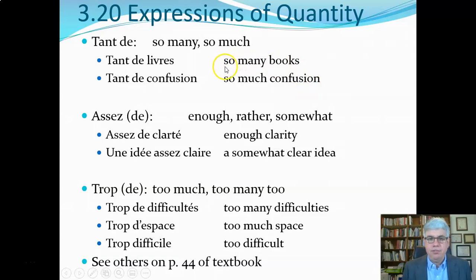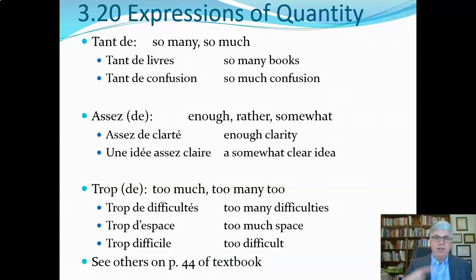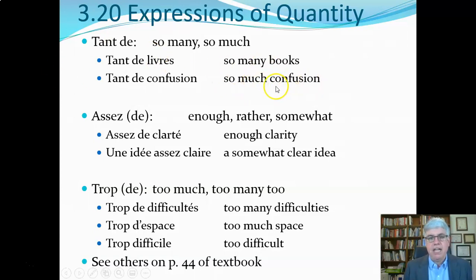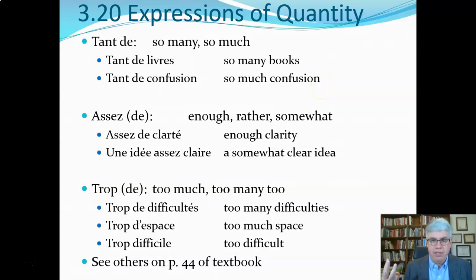We use 'so many' when the noun is countable. You wouldn't say so much books; you'd say so many books, because you can have one book, two books, three books, four books. We use 'much' when the noun is not countable — you can't say one confusion, two confusion, three confusions. So we use 'much' for non-countable nouns.